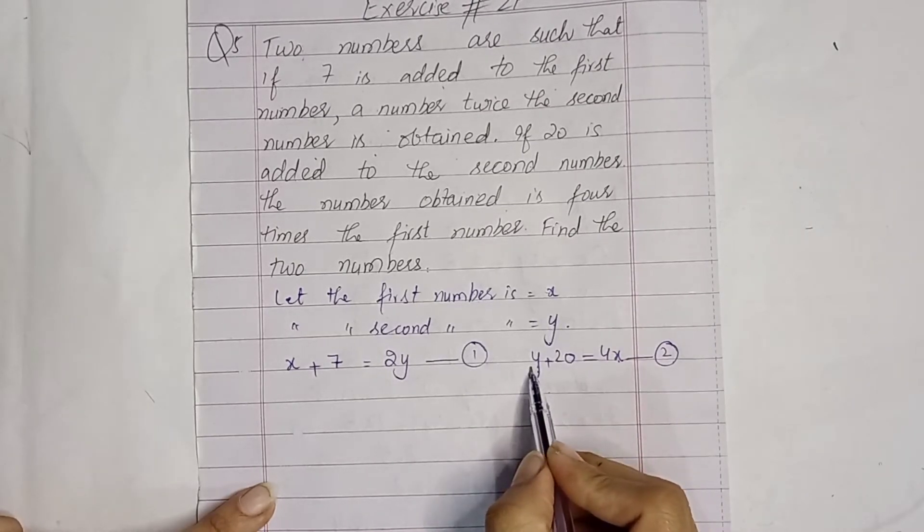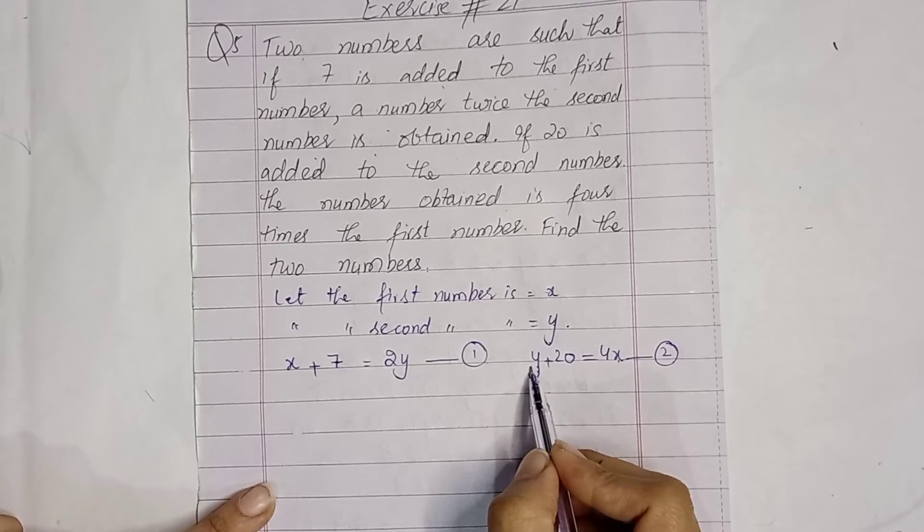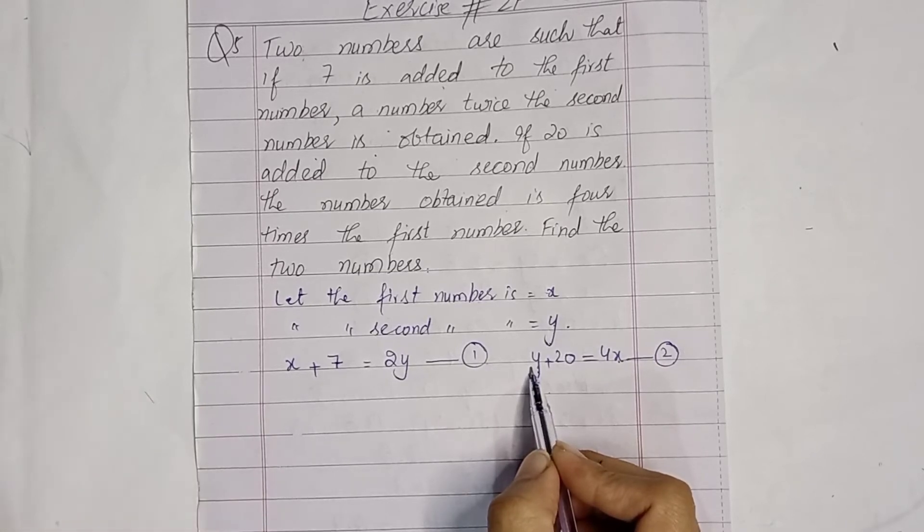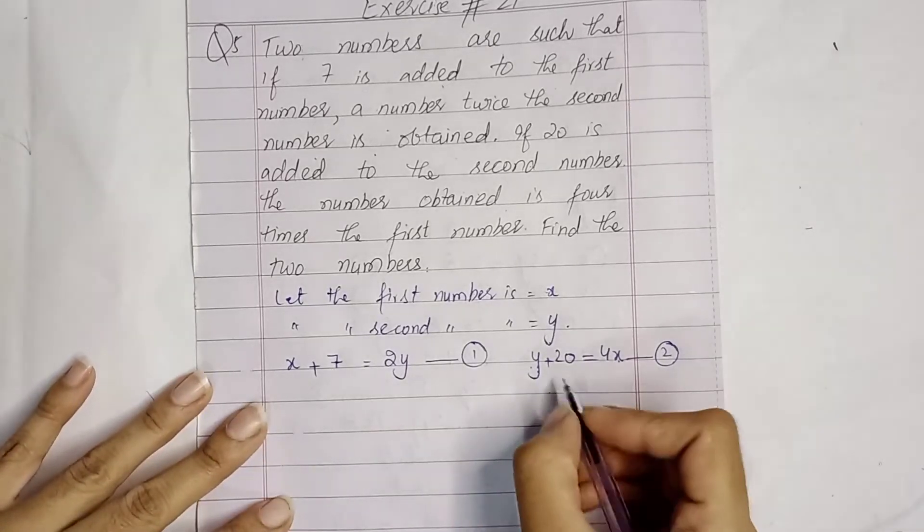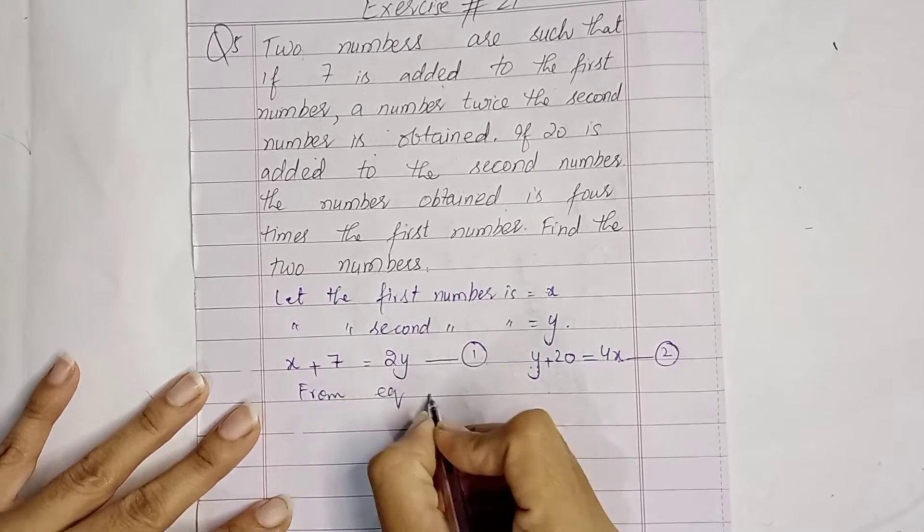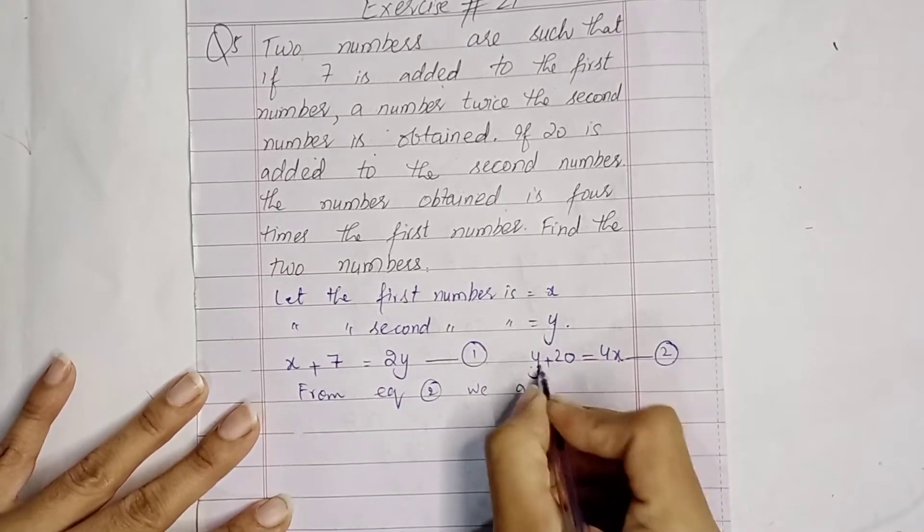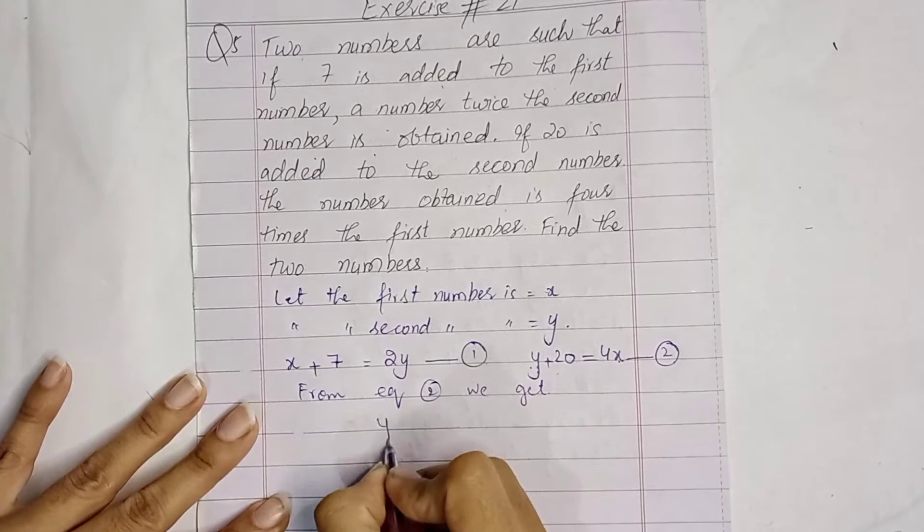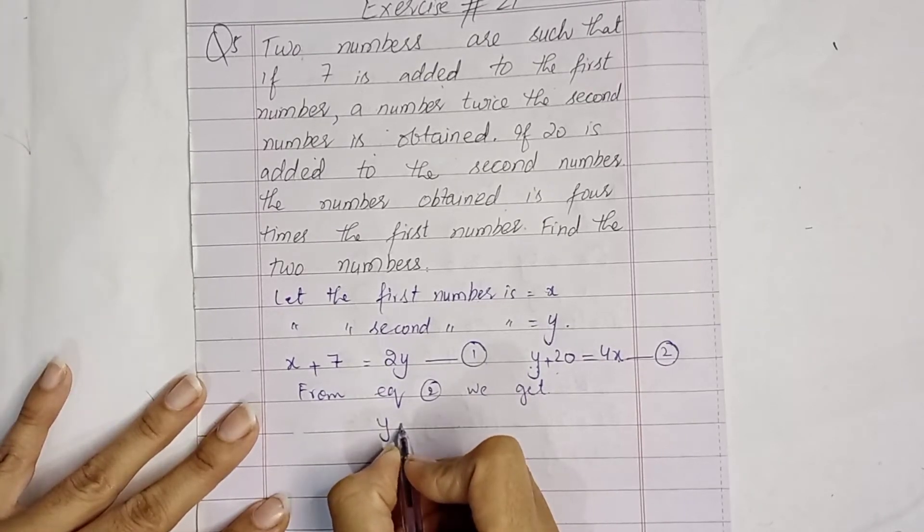You can substitute. From equation 1, we get y value easily. From equation 1 we get y equals x plus 7 divided by 2.